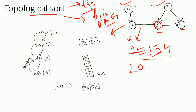Suppose we start our DFS traversal from vertex 0. We find its adjacent vertex, which is vertex 1. In DFS, we leave the current vertex and start exploring the unvisited adjacent vertex. So from DFS of vertex 0, we go to perform DFS for vertex 1. The adjacent vertex of vertex 1 is 3, so from DFS 1 we jump to DFS of vertex 3.